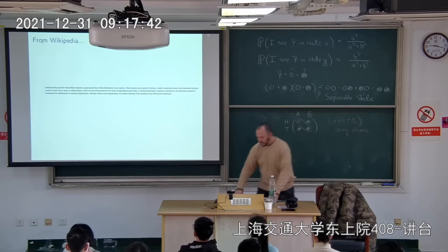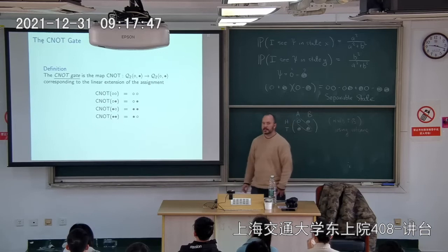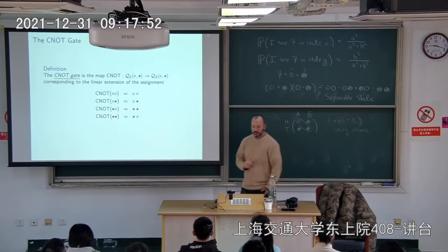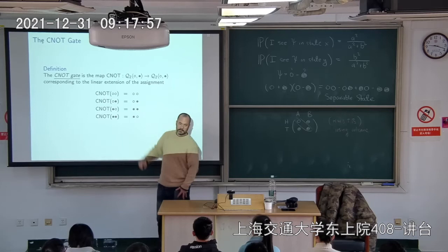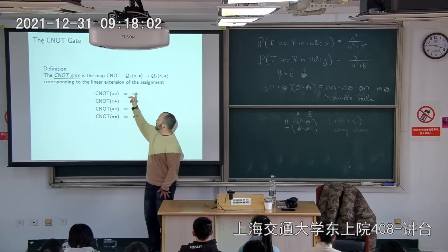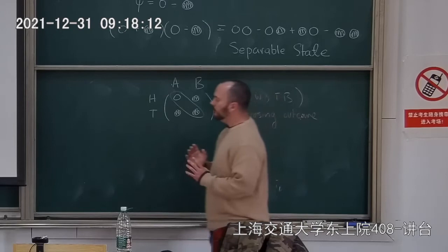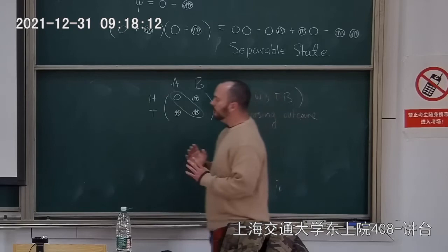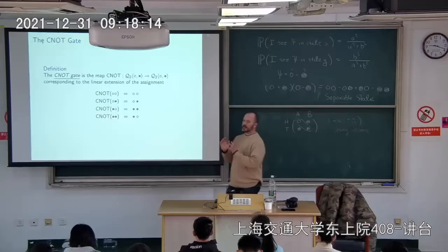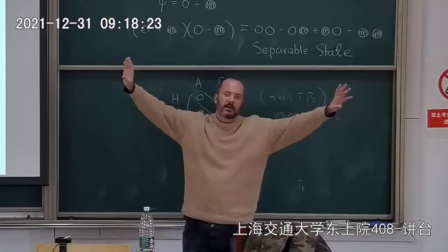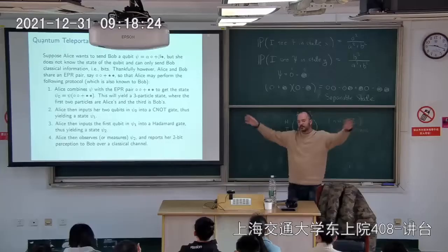The CNOT (controlled-NOT) gate takes a two-particle state to a two-particle state. If the first particle is white, it does nothing to the second particle. If the first particle is black, it flips the second particle. For quantum teleportation, all we need is a Hadamard gate and a CNOT gate. Suppose Alice and Bob are at opposite ends of the universe.